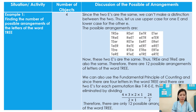We have here a situation. Example number one: finding the number of possible arrangements of the letters of the word THREE. The number of objects is four. Since the two E's are the same, we can't make a distinction between the two.